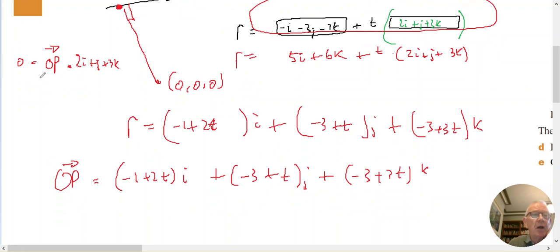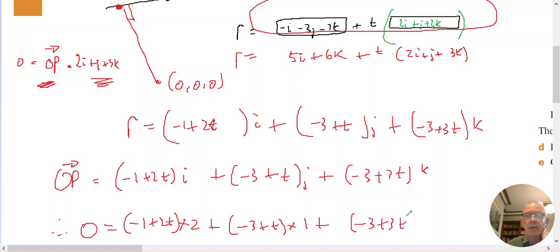And if I do O to P dot this, I will have, therefore, 0 equals minus 1 plus 2T times 2, plus minus 3 plus T times 1, plus minus 3 plus 3T times 3. And that's going to equal 0.